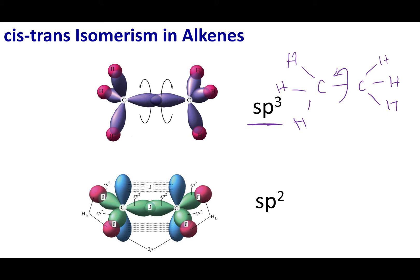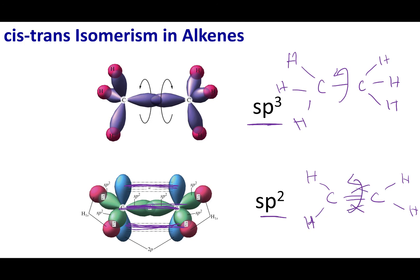Now when I have a double bond, I am sp2 hybridized. The first bond in the double bond is the overlap between an sp2 orbital and an sp2 orbital. But the second bond in the double bond is the overlap between an unhybridized p orbital and an unhybridized p orbital. This means that when I have a double bond, I cannot rotate around that double bond.